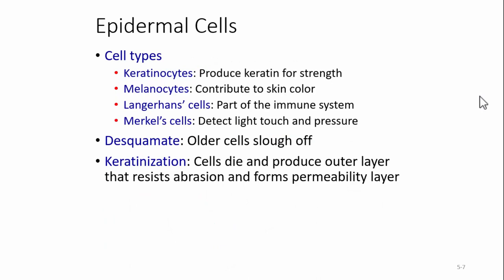There are different cell types within the epidermis. We have keratinocytes, which produce keratin for strength. Keratin is the protein that your skin is made of — your hair is keratin, your fingernails and toenails are keratin, the horns on a bull are keratin, it's a pretty tough substance. Melanocytes are what contribute to skin color, giving you your base color. We also have Langerhans cells, which are part of the immune system, and Merkel cells, which detect light touch and pressure.